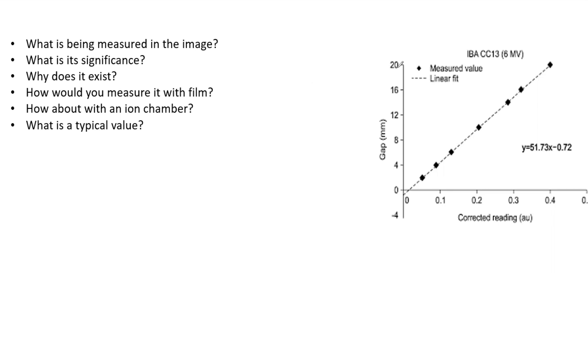The reason it exists is it's essentially leaf end leakage and exists for all MLCs, but variance exists because the leaves have rounded ends. Even when totally closed there is a gap. Radiation can go through. The width of this strip is the DLG essentially.